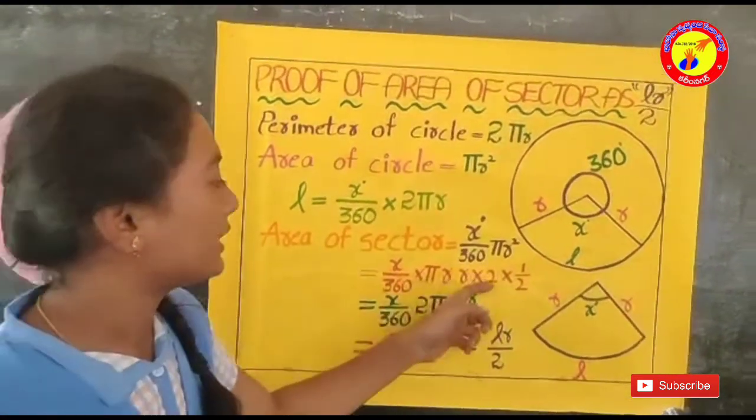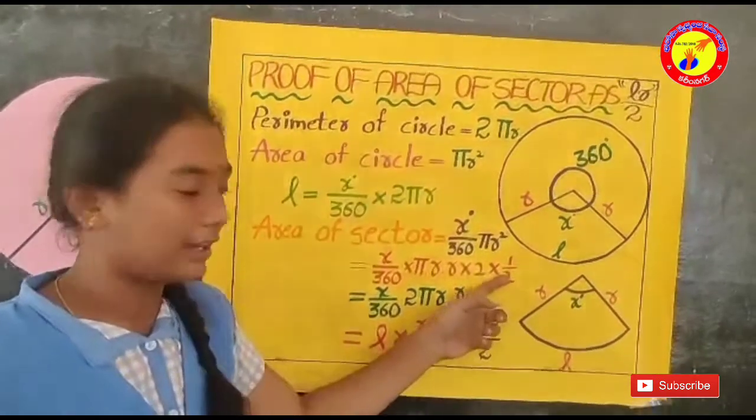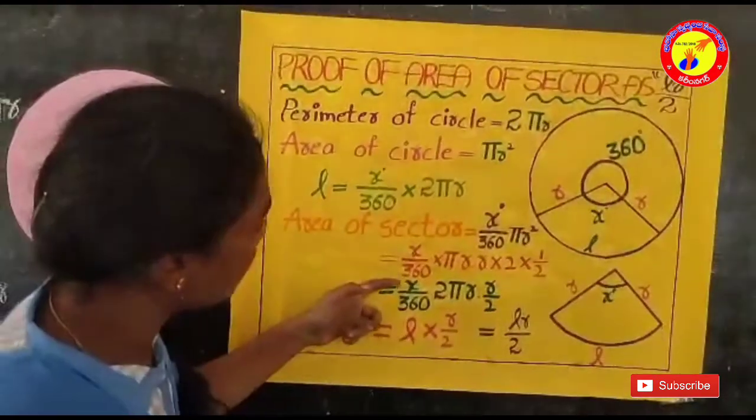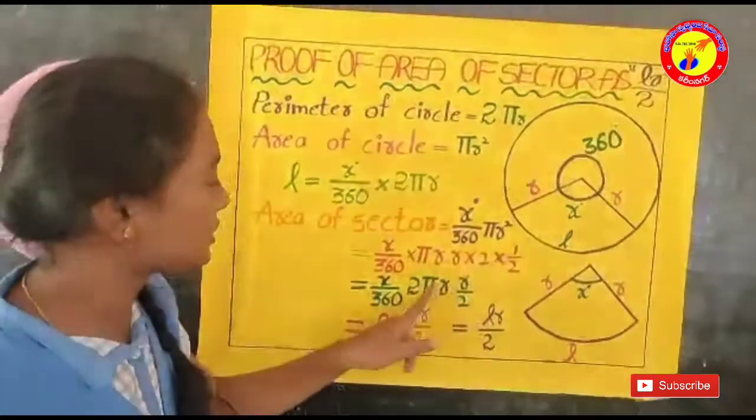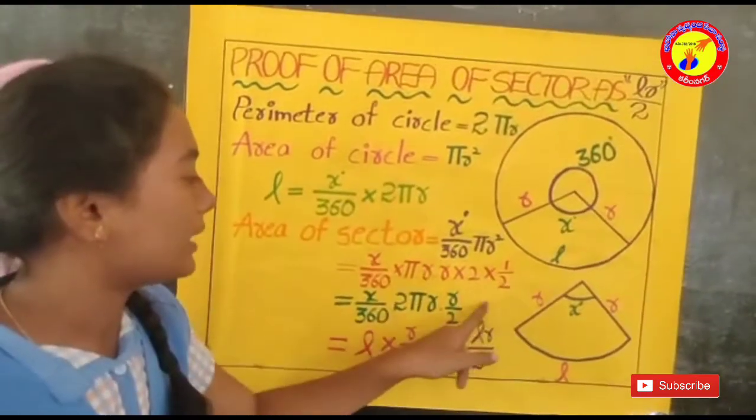Because here the 2 into 1 by 2 is equal to 1. Here x by 360 into πR into 2 is 2πR. And R into 1 by 2 is R by 2.